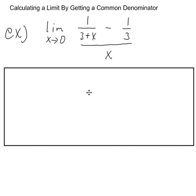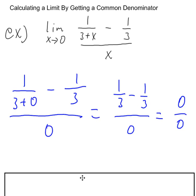So the first thing you want to do when you evaluate the limit is substitute in the value. And here we want zero. So that's what I did here is I replaced x with zero. And zero plus three is three. So the numerator becomes one third minus a third, which is zero. And the denominator is zero.